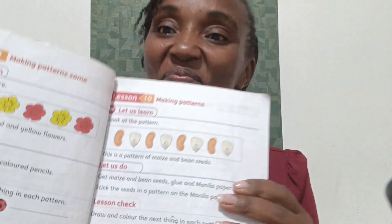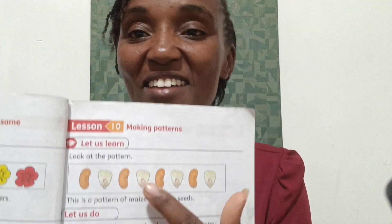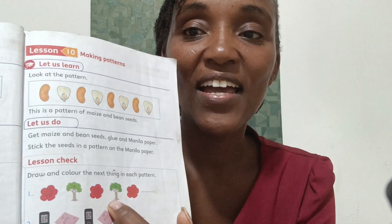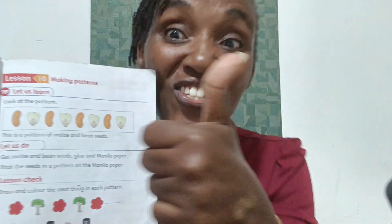Or you can make patterns using things that are different. For example, you can get maize and beans and arrange them: beans and maize, beans and maize — that is how you make patterns. In our book, it starts with a flower then a tree, a flower then a tree, a flower then a — tree. Well done!